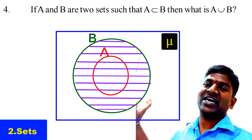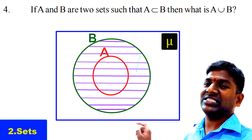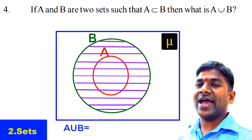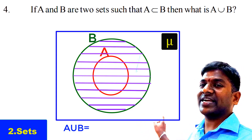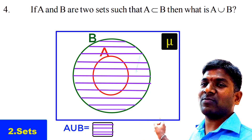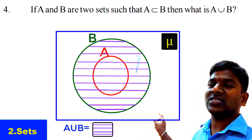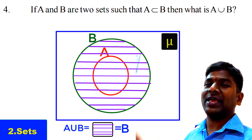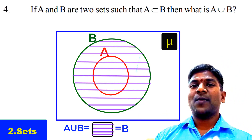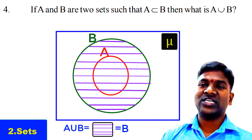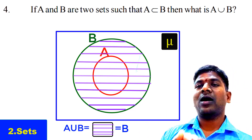So the Venn diagram confirms: A union B equals the shaded region, which is equal to B. Therefore, if A ⊆ B, then A union B = B. We now understand this both through calculation and through the Venn diagram representation.